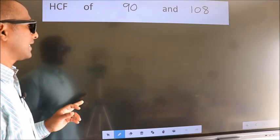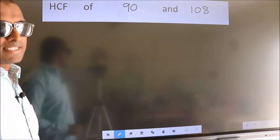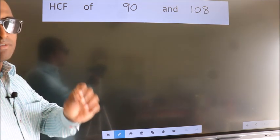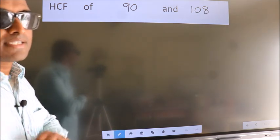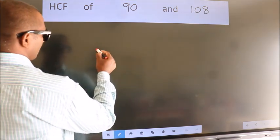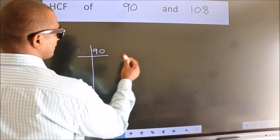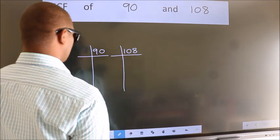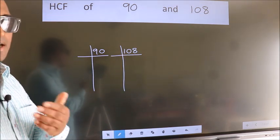HCF of 90 and 108. To find the HCF, we should do the prime factorization of each number separately. What I mean is, see, 90 here, 108 here. This is your step 1. Next.